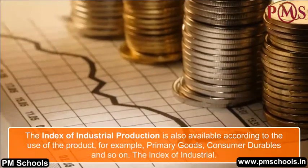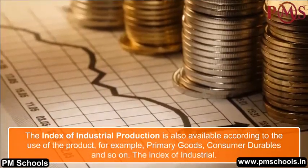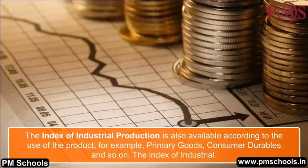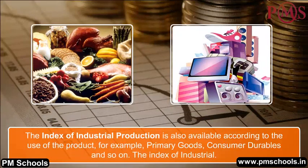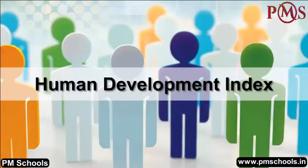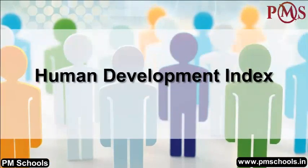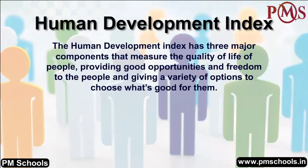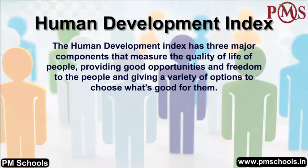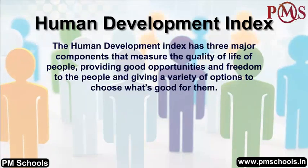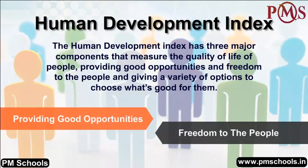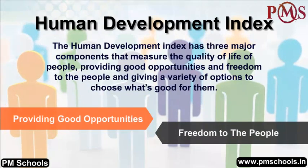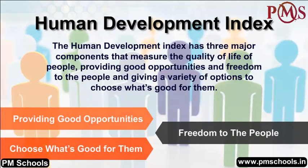The Index of Industrial Production is also available according to the use of the product — for example, primary goods, consumer durables, and so on. The Human Development Index has three major components that measure the quality of life of people: providing good opportunities and freedom to the people, and giving a variety of options to choose what is good for them.